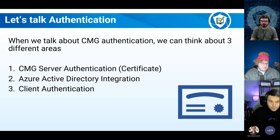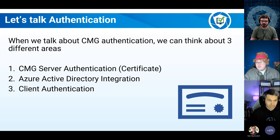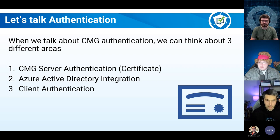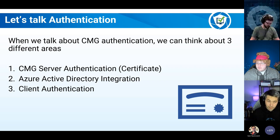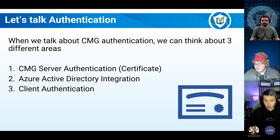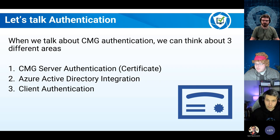When we talk about authentication, the first thing we need to think about is the CMG server authentication certificate, which we alluded to when we went into the lab. We'll have a quick discussion around that. The next part is the Azure Active Directory integration, which happens when you go through the wizard to create the CMG — it's very important to help authenticate Azure AD users and hybrid identities. Then we'll talk about client authentication options: do I have to have PKI? Can I use tokens instead? Can I use Azure AD identities?